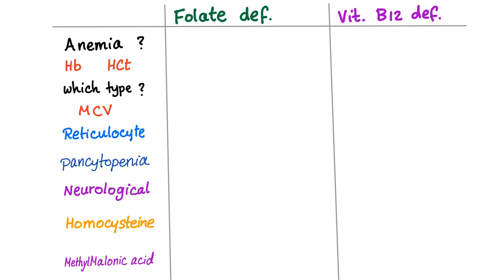Which one of them will have anemia? Of course, both of them. But please be aware of the fact that B12 deficiency can only have neurological symptoms without any symptoms of anemia. How about the hemoglobin and hematocrit? Both are decreased in both of them. Why? Because it's anemia.